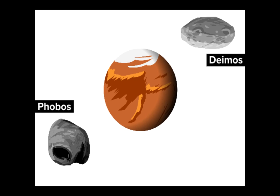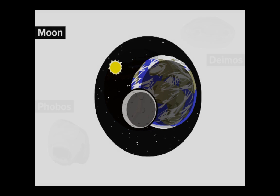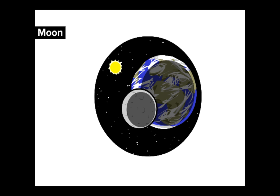Mars has two moons, called Phobos and Deimos. The Earth only has one moon, called the Moon, because we're really imaginative.